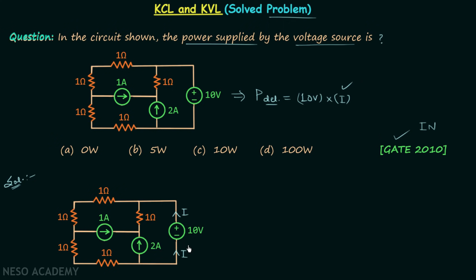Now we will focus on the other two sources present in the circuit — they are current sources. The first source is providing 1 ampere and the second source is providing 2 ampere. If you focus on this node, you will find 3 elements are connected at this node, therefore this is a principal node, and at a principal node current division will take place. We will use KCL to find out the current in this branch.